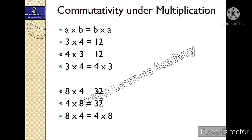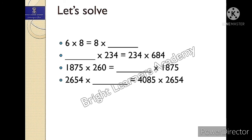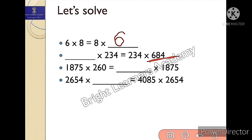Now let's solve a few questions for multiplication as well. The pattern is the same as in addition. First: six into eight equals eight into what? Please comment below if you know the answer. Six into eight is equals to eight into six. Second question: blank into 234 is equals to 234 multiplied by 684 — the missing number is 684.